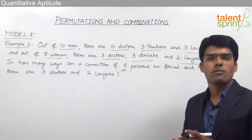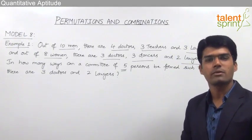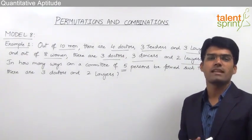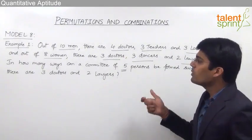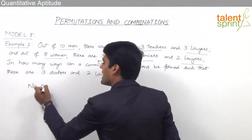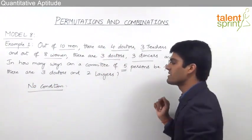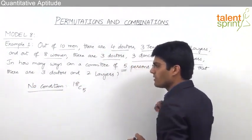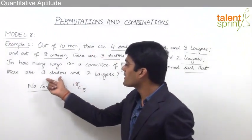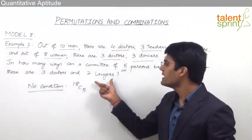Forming a committee or a team comes under combination, and we use NCR, that is N factorial divided by (N minus R) factorial into R factorial, where N is the total number of persons and R is the number to be selected. Without any condition, with 18 persons, the answer would be 18C5. But here we have a condition: there should be 3 doctors and 2 lawyers out of the 5 persons selected.